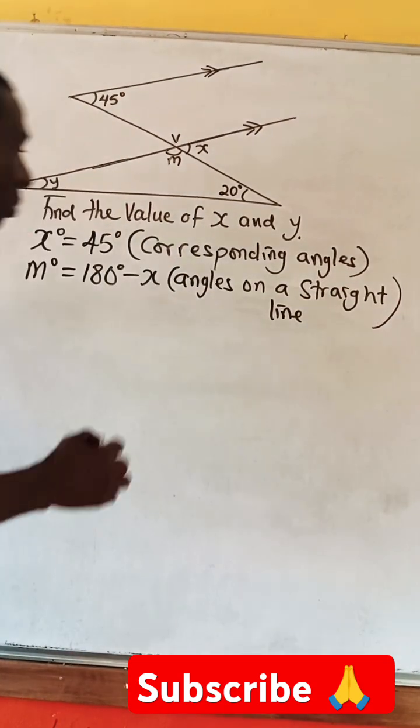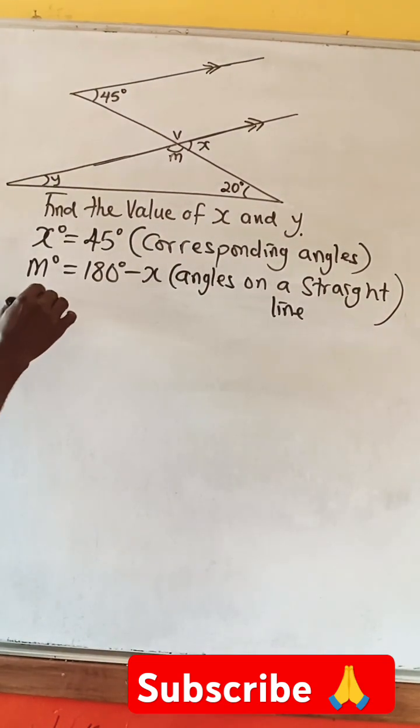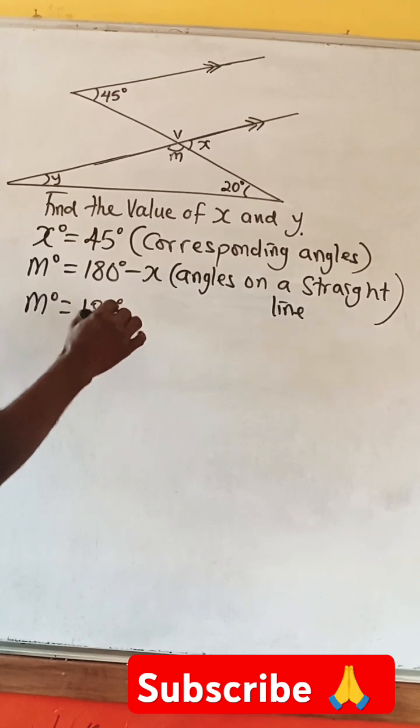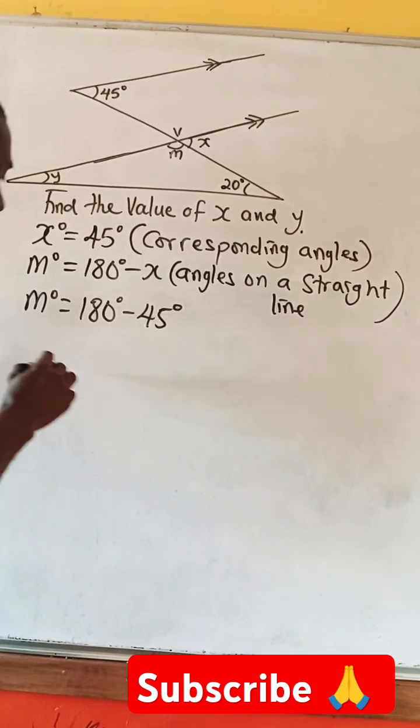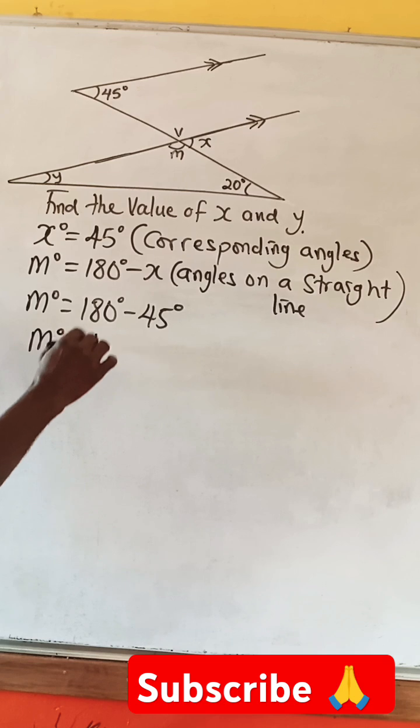Or you can call it supplementary angle. So, meaning M equals 180 minus 45 degrees. So, M equals 135.